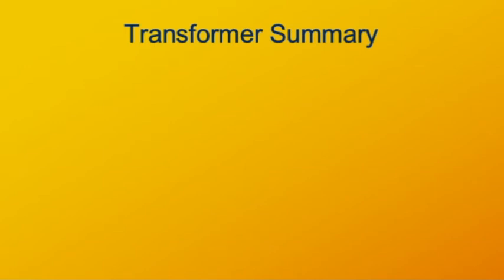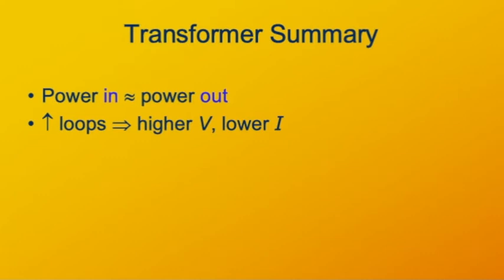So the main ideas for an AC transformer are that the power is the same on both sides, the coil with the most loops has the higher voltage and lower current, while the coil with the fewest loops has the lower voltage and higher current.